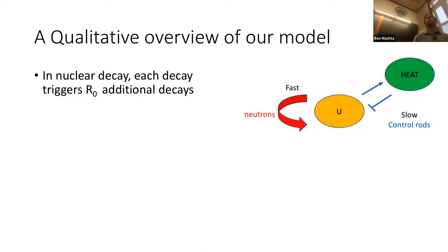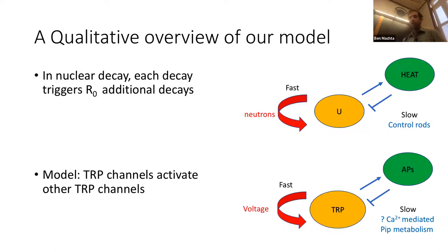Our model is analogous: uranium decays trigger more decays on a fast timescale via slow neutrons; the reaction produces heat; then on a much slower timescale control rods feed back and bring the system back to the bifurcation. In our model, TRP channels activate themselves through voltage, produce action potentials, and then on a much slower timescale action potentials feed back — possibly via calcium influx regulating metabolic byproducts that change TRP activity.